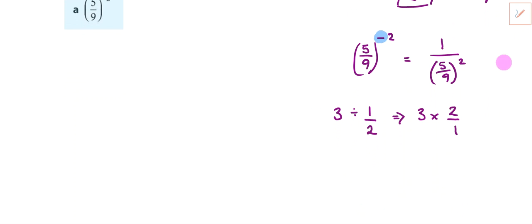So using that as an example, if I have this one, we're going to use that that I've just said. We multiply it by the reciprocal. So 1 divided by 5 ninths squared, instead of doing the division, we're going to do 1 multiplied by the reciprocal. So it's 9 over 5 squared.